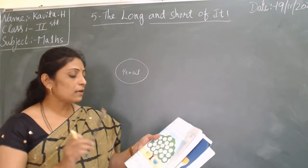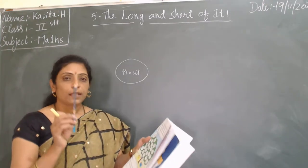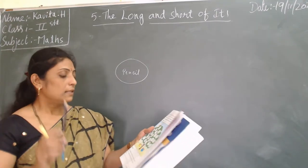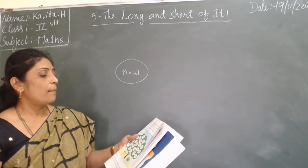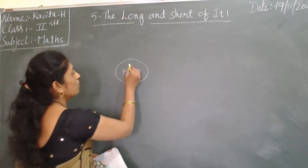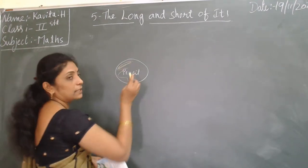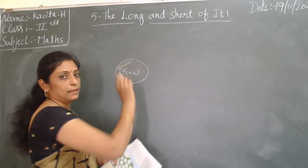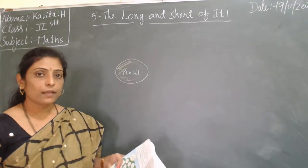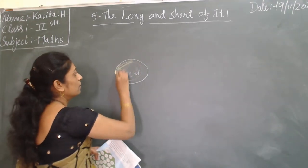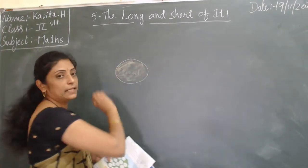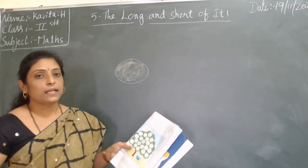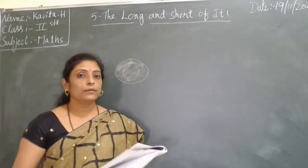Which color do you give for pencil? Centimeter is yellow. So pencil gets yellow color. You have to fill the yellow circle. Next — sari. Sari means clothes. Clothes are long. Is sari measured in meter or centimeter?